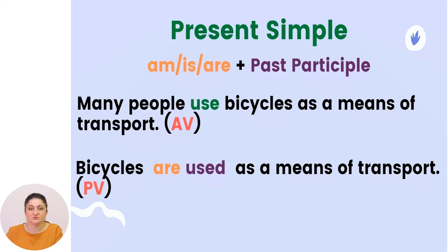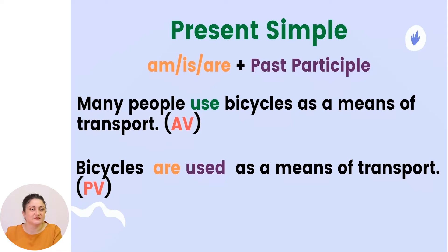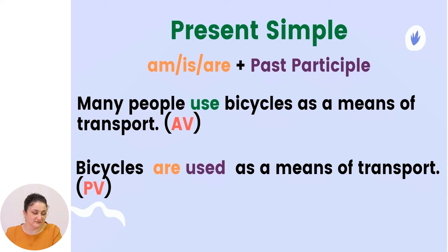We start with present simple. If you want to change a present simple sentence into passive voice, you have to remember that present simple is changed using the forms of the verb 'to be' in present tense plus the past participle of the verb. Example: 'Many people use bicycles as means of transport.' This is active voice. The passive voice is: 'Bicycles are used as a means of transport.'